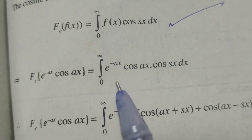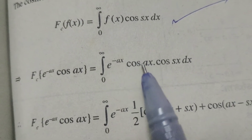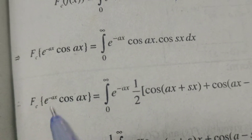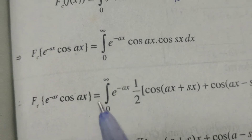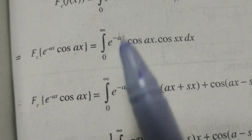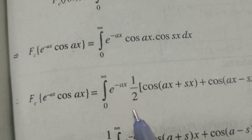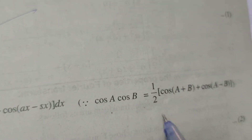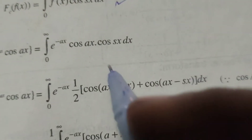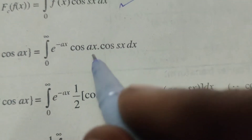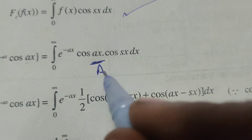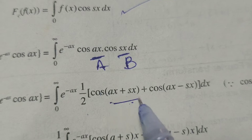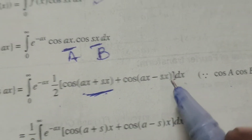Now, applying the product formula cos a cos b equals 1 by 2 into cos of a plus b plus cos of a minus b. So we apply this same formula here: 1 by 2 into cos of a plus b plus cos of a minus b, into dx.